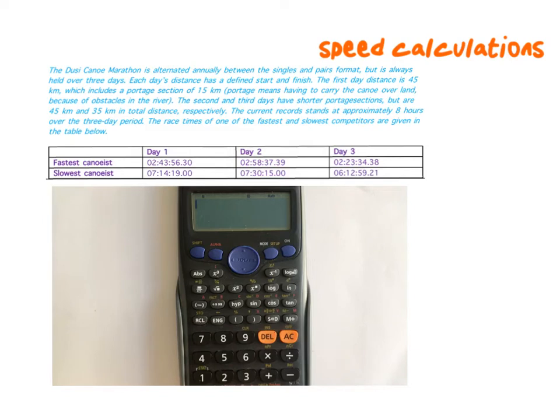You can also be asked to do speed calculations. So if I would like to know what the fastest canoe speed was on the first day, I need to consider his time of 45 or the distance of 45 kilometers and another 15 kilometers of portage. And this portage just means that there are sections of the river that he would be unable to paddle on. So he would have to carry his canoe for these sections. So there was 45 kilometers that he could be in his boat and then 15 kilometers where he had to carry his boat. So this gives us a total distance of 45 plus 15, which is 60 kilometers. Quite a long day for him.